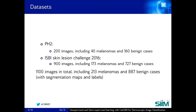Two datasets were employed for the evaluation: the PH2 dataset and the ISBI Skin Lesion Challenge 2016. PH2 contains 200 images, including 40 melanomas and 160 benign cases. Skin Lesion Challenge 2016 has 900 images with 173 melanomas and 727 benign cases. In total, we have 1,100 images including 200 melanomas and around 900 benign cases. As the number of benign cases is 4 times more than the number of melanomas, we oversample the melanomas to balance the dataset. For unsupervised training, we used the combined datasets, and for semi-supervised training, we supplied the labels of the Skin Lesion Challenge dataset. Data augmentation was used to further boost the size of the dataset.